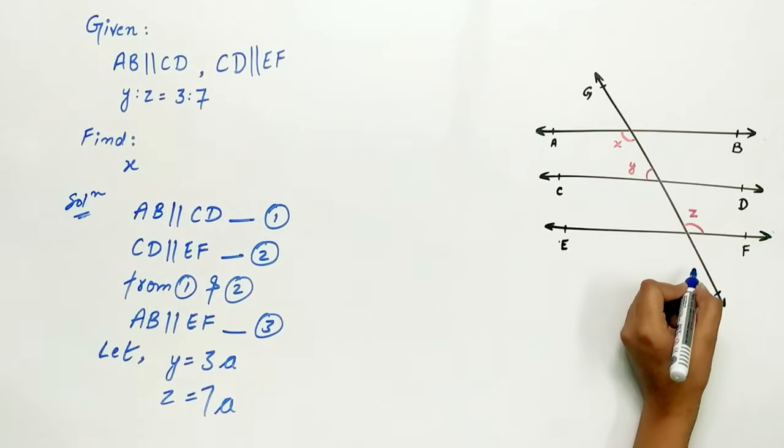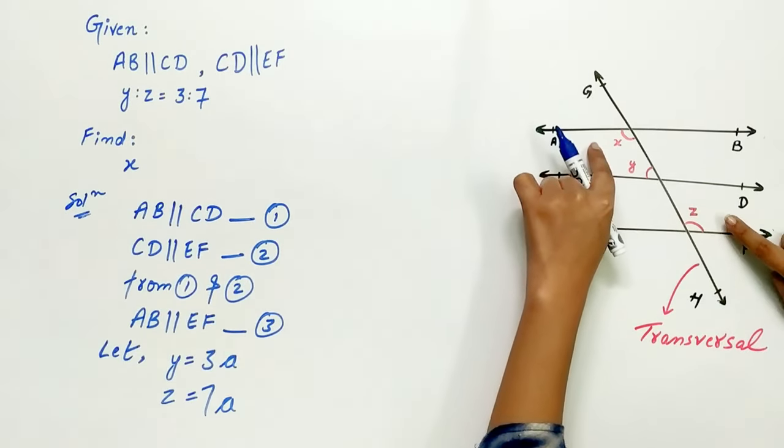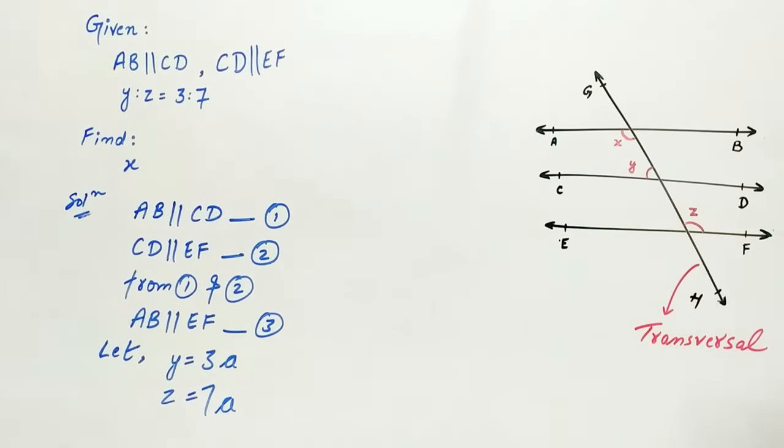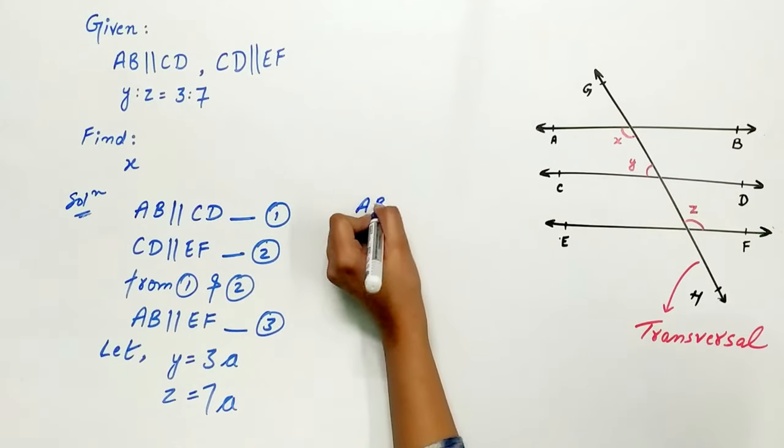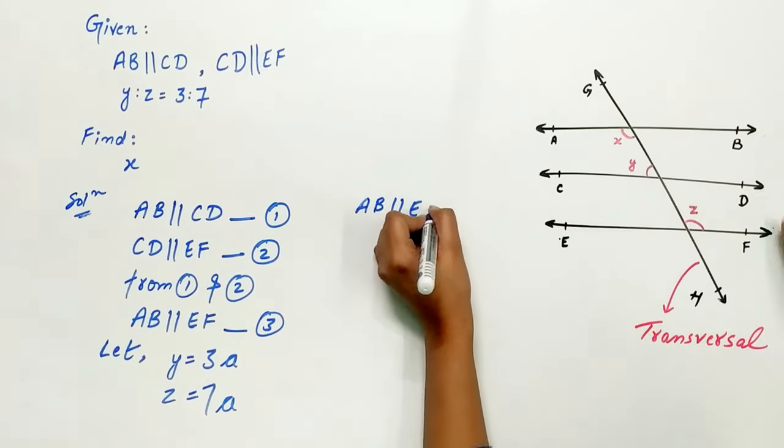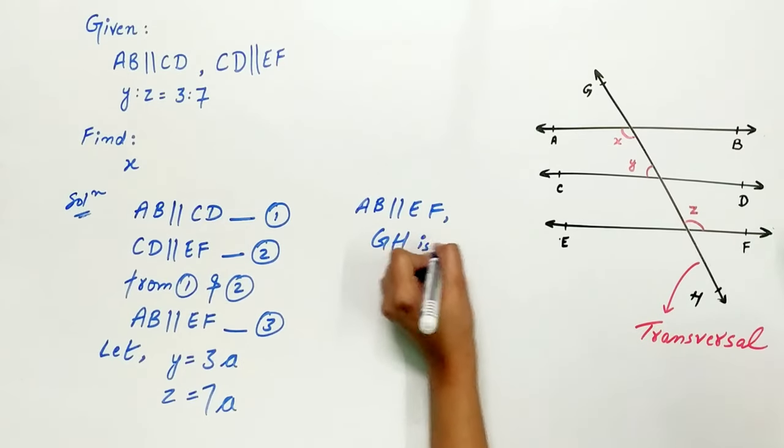GH is a transversal. Angle Z and angle X are alternate interior angles. Hence, AB is parallel to EF and GH is transversal.